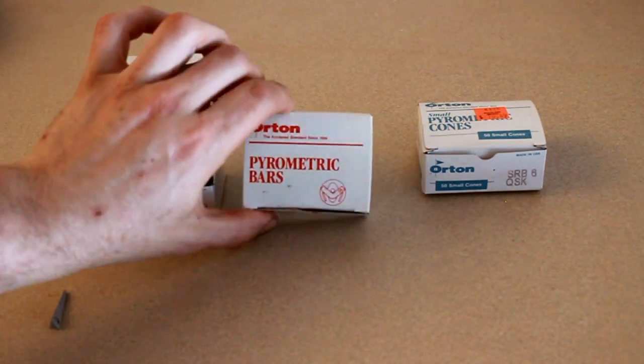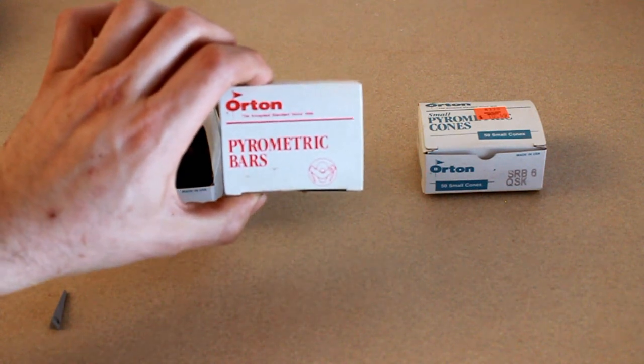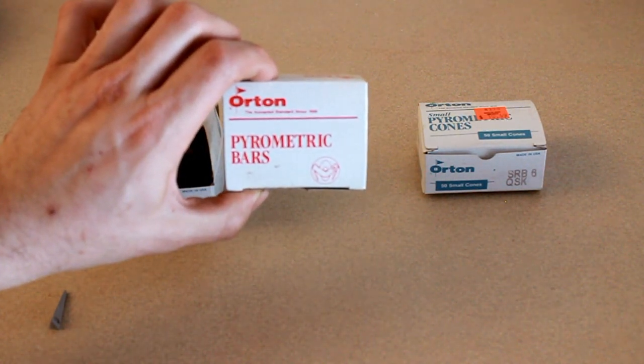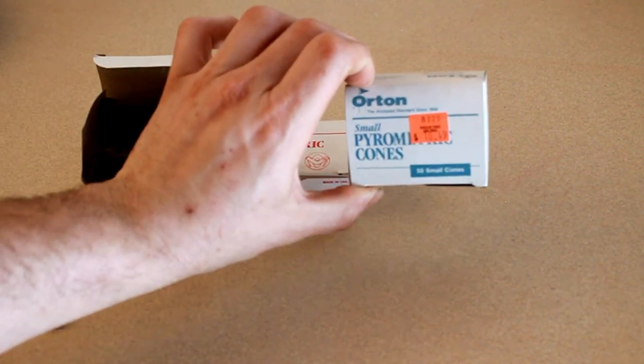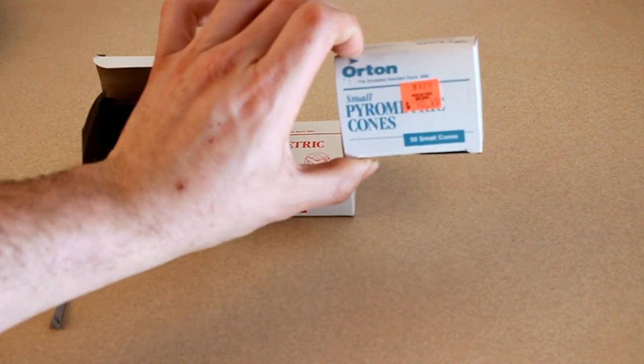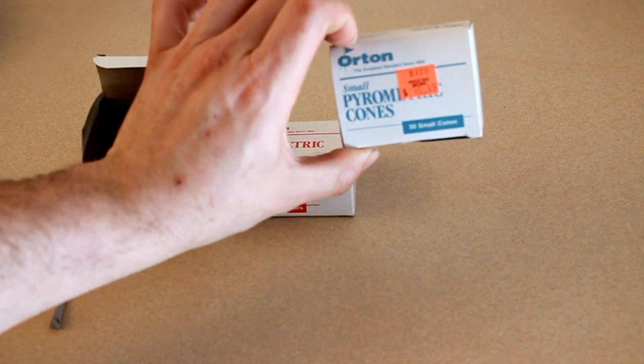For example, the cones inside of this box are at cone 06. So these are going to start melting around 1828 degrees. But these over here are cone 6. Not cone 06. Cone 6. And these are going to start melting around 2232 degrees.